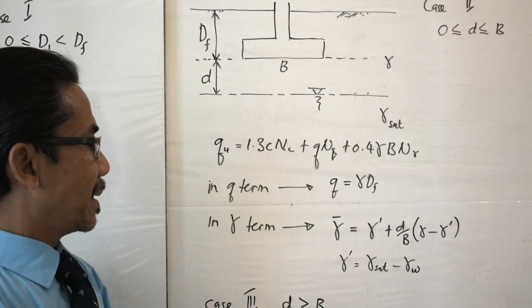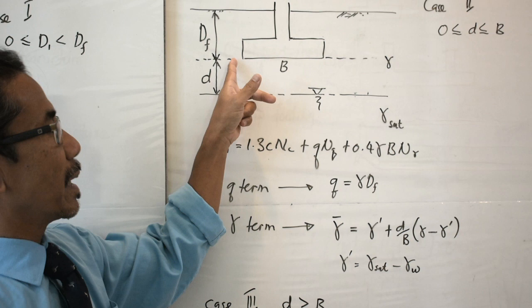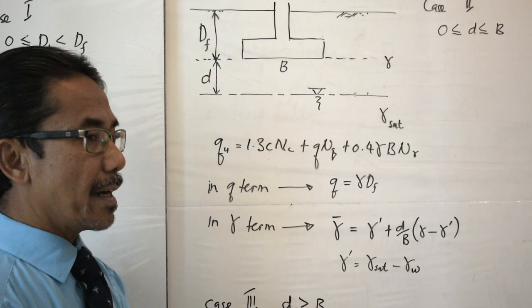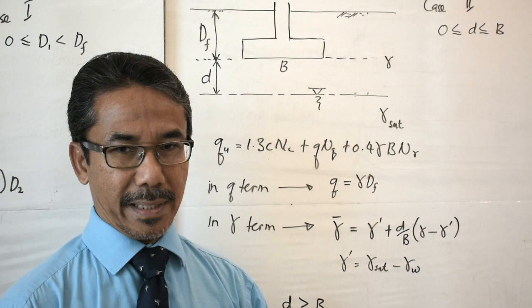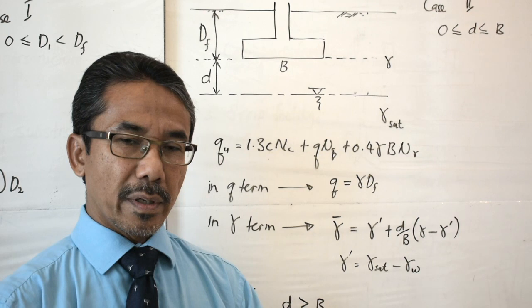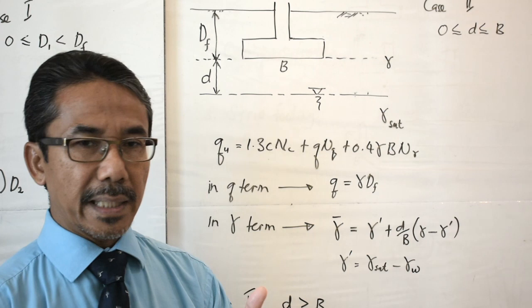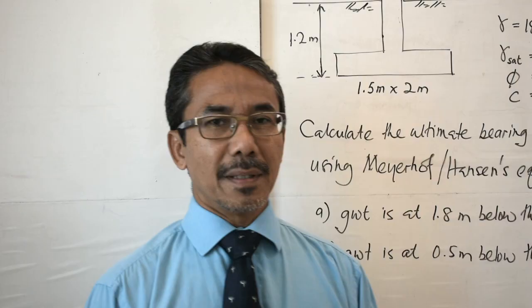The third and final case: when small d — the distance from the base of the footing to the surface of the water table — is greater than B, the width of the footing, then the groundwater table has no effect on the bearing capacity. These three cases are applicable to both Terzaghi's equation as well as Meyerhof-Hansen's equation.